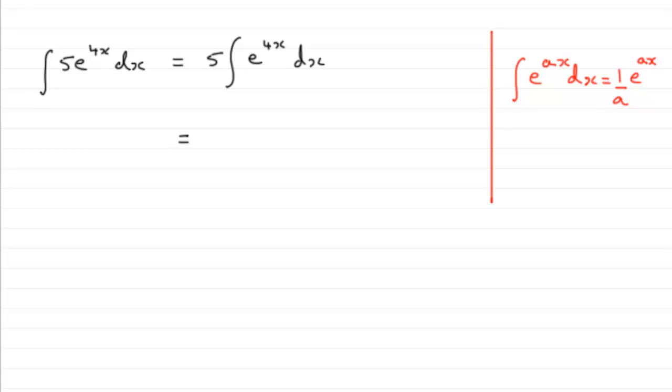And so we can use that here. We've got 5 multiplied by, and the a value here is the 4, so it's going to be 5 multiplied by 1 over a, 1 quarter, e to the power of 4x plus the constant of integration which I'll call c.